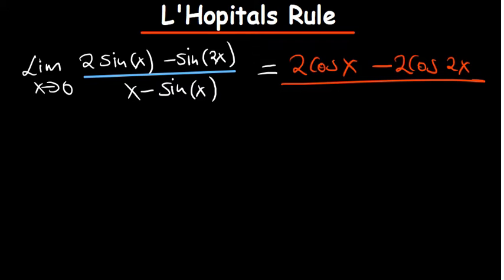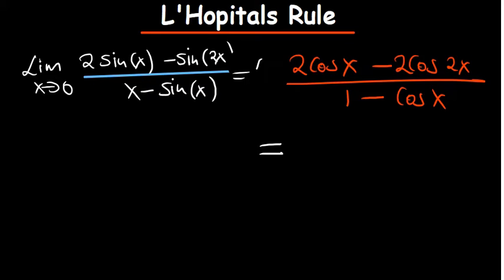On the bottom, differentiating what we have — x minus sine of x: x is going to give us one, and sine of x is going to give cosine of x, because the derivative of x is just one, so no difference will be seen there.